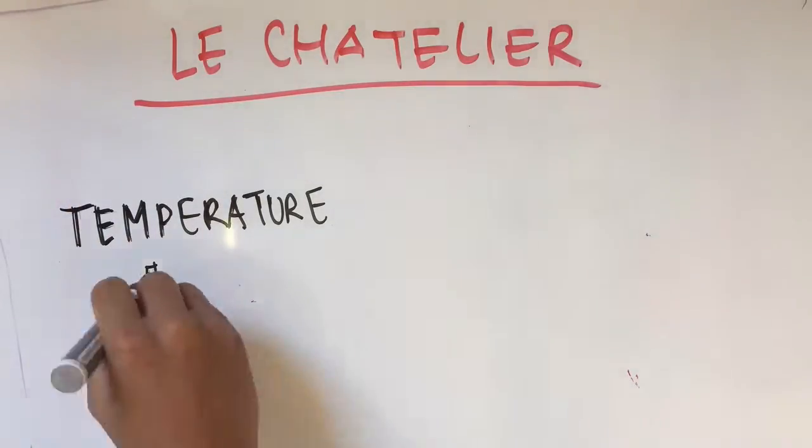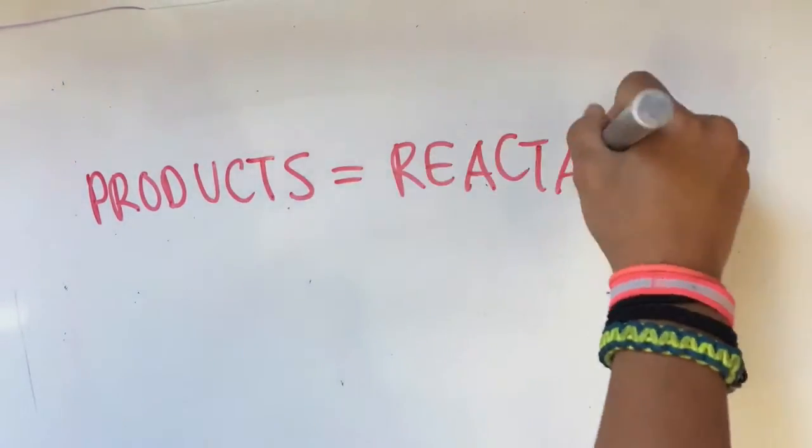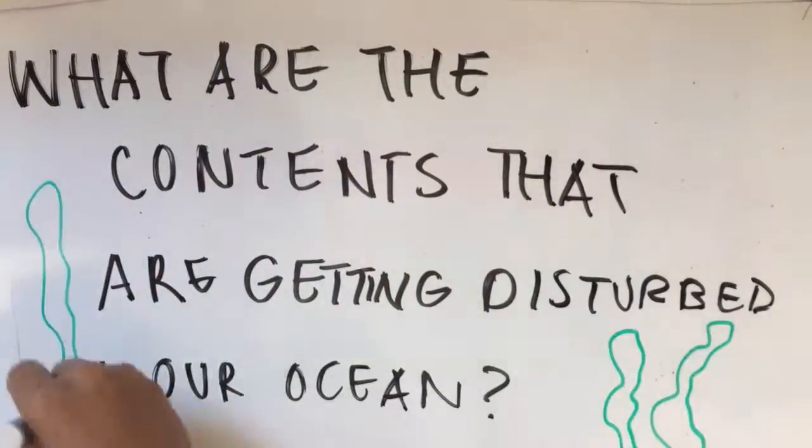This applies to temperature, pressure, and the contents of the equilibrium. When the products of the reaction change, so do the reactants, and vice versa. So what are the contents in the equilibrium that are getting disturbed?